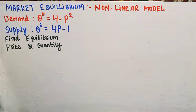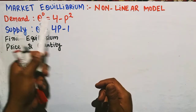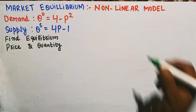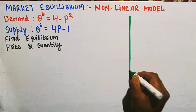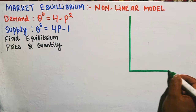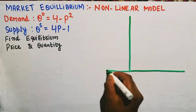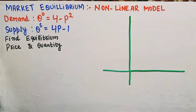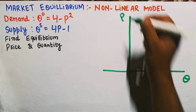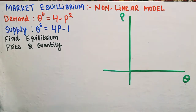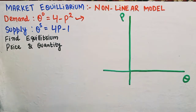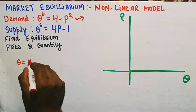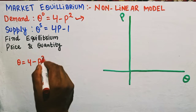Let's first draw the graph of these demand and supply functions. We have quantity on one axis and price on the other axis. Let's take the demand function first: Q = 4 - P².